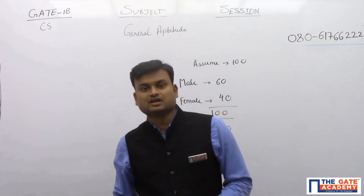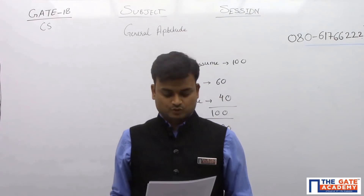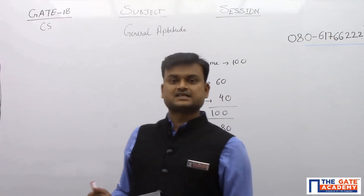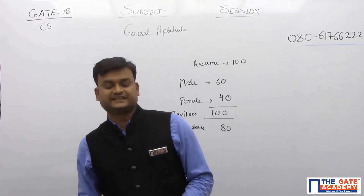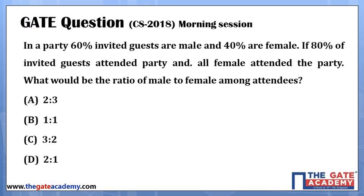Hello friends, let's solve the next memory-based question from a competitive science paper, GATE 2018. So in a party, 60% of invited guests are male and 40% are female. If 80% of invited guests attended the party and all females attended the party, what would be the ratio of male to female among attendants?